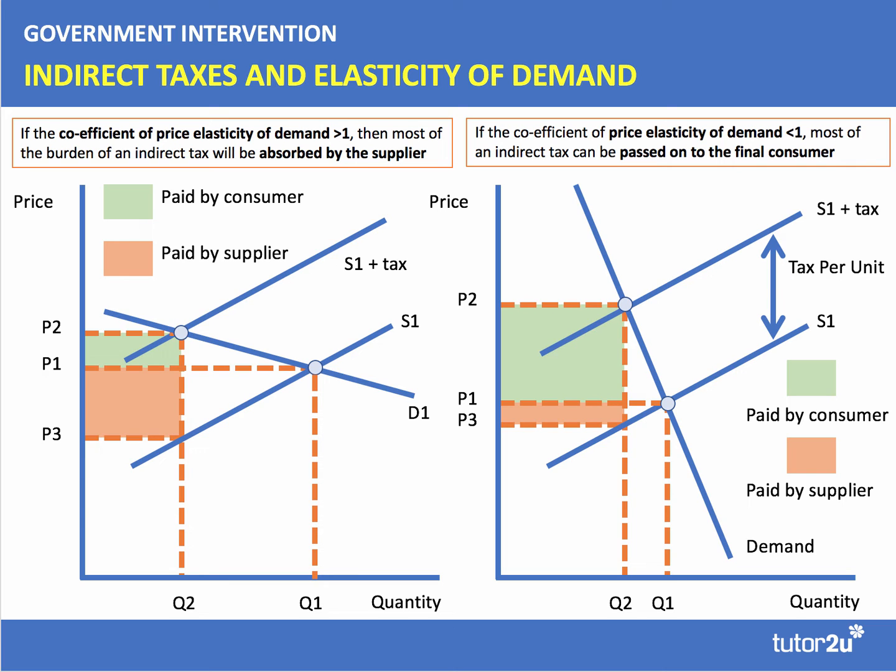Now let's contrast that. Here's the diagram showing where demand is more inelastic. In this case, the green area — the amount of tax paid by the consumer — is significantly bigger than the orange area. Most of the tax burden has been shifted by the supplier onto the consumer. When the elasticity of demand is less than one — in other words, when demand is relatively inelastic — most of the tax will be paid by the consumer, as the supplier is able to pass on the majority of the tax.